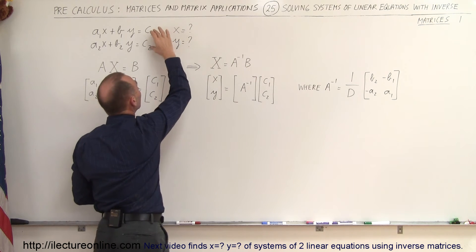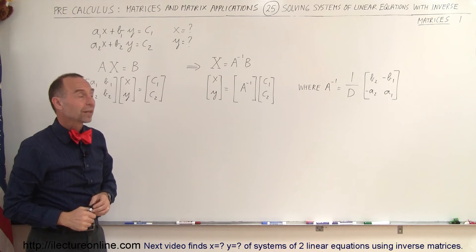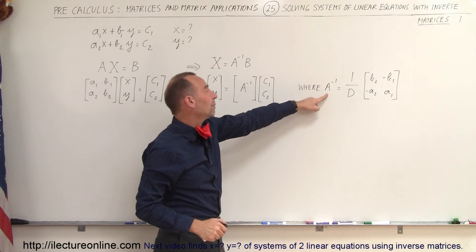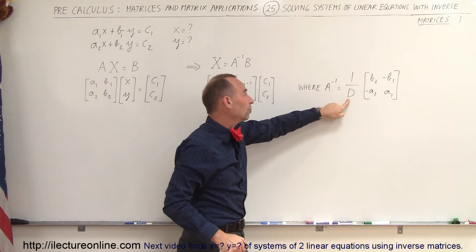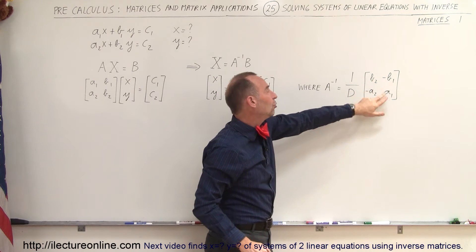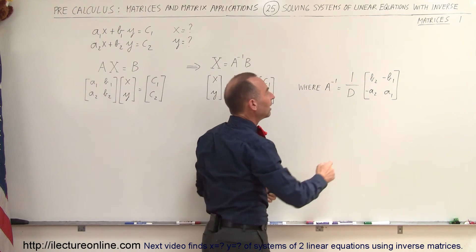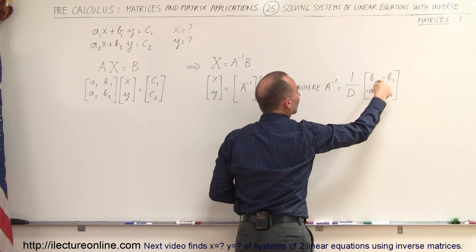And since we know that for a two by two, the inverse of matrix A is equal to one over the determinant times A1 and B2 reversed in position, and negative signs placed over there,